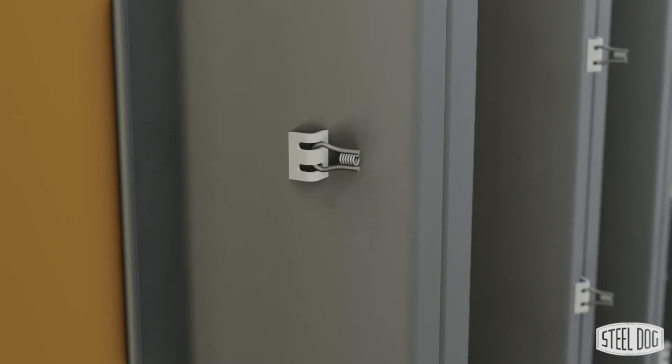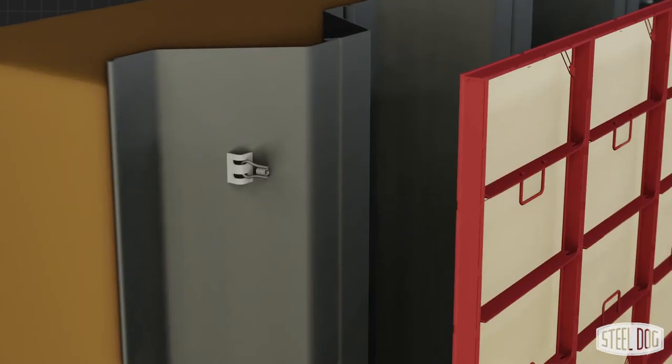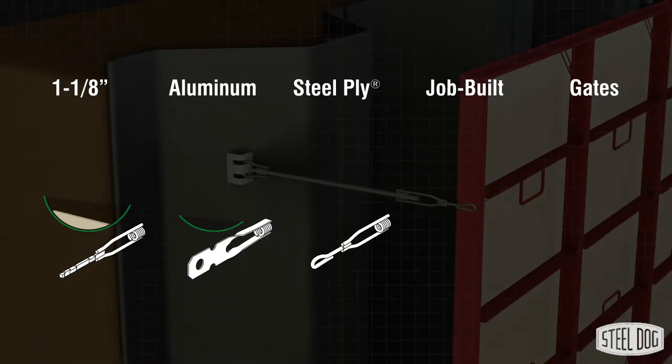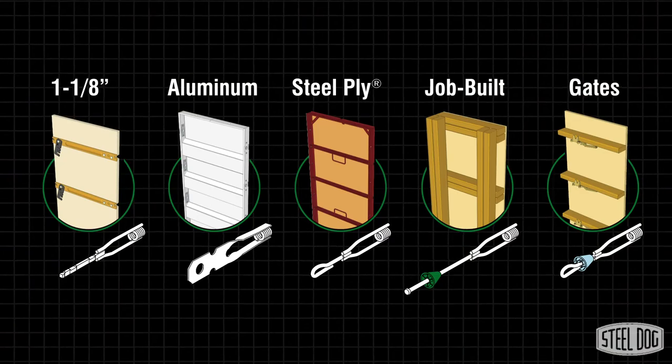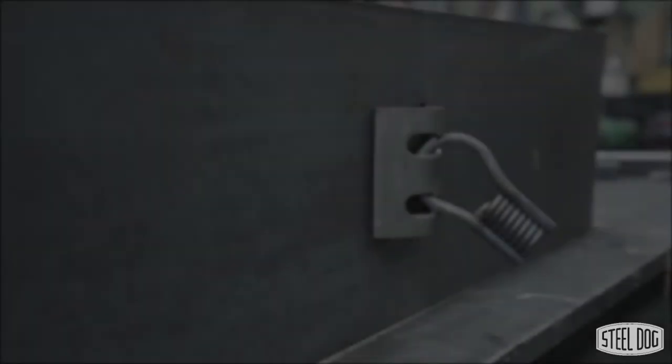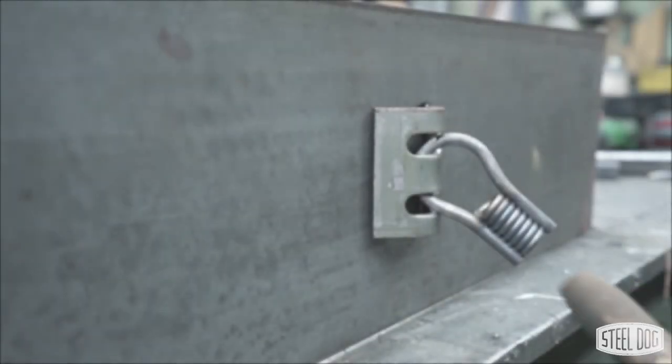Weld the bracket to each location and attach your formwork using half inch coil rod and a steel dog transition tie. We make a transition tie for almost every handset form system. The bracket should be welded using a mig or stick welder.